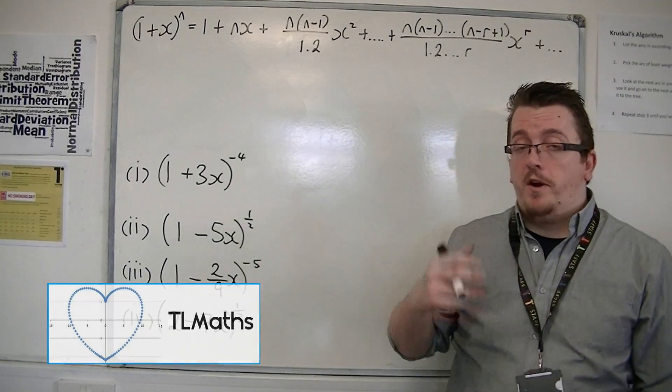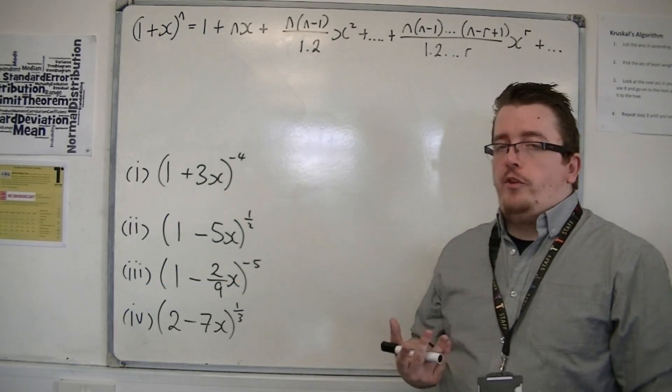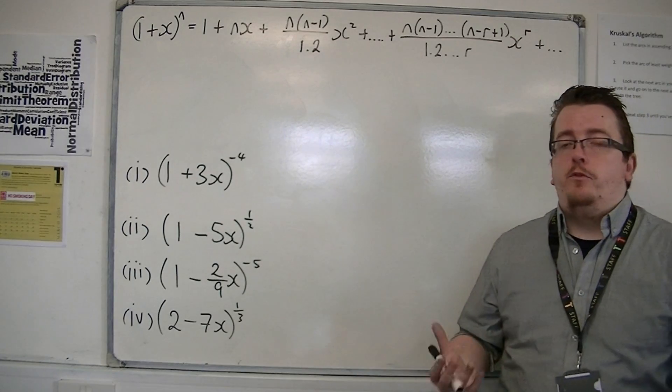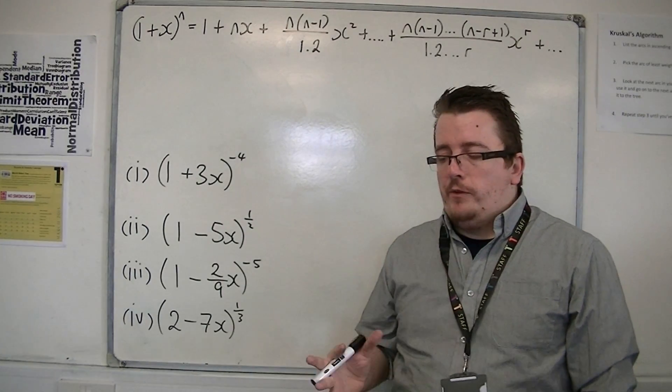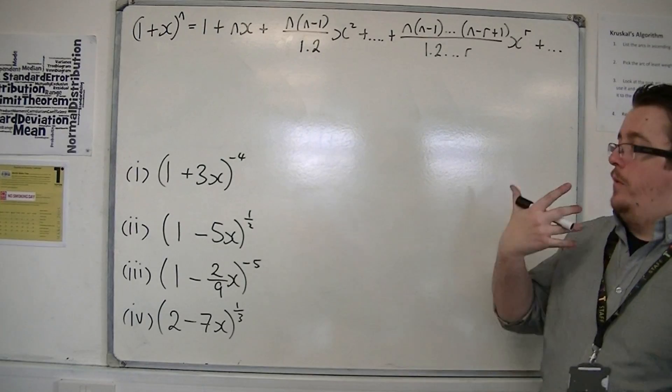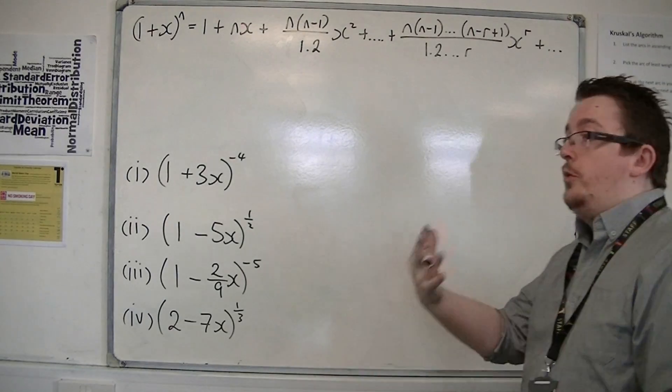When I was reintroducing the binomial expansion, I introduced something known as the range of validity, or the values that the expansion is valid for, so that it will converge to a number.